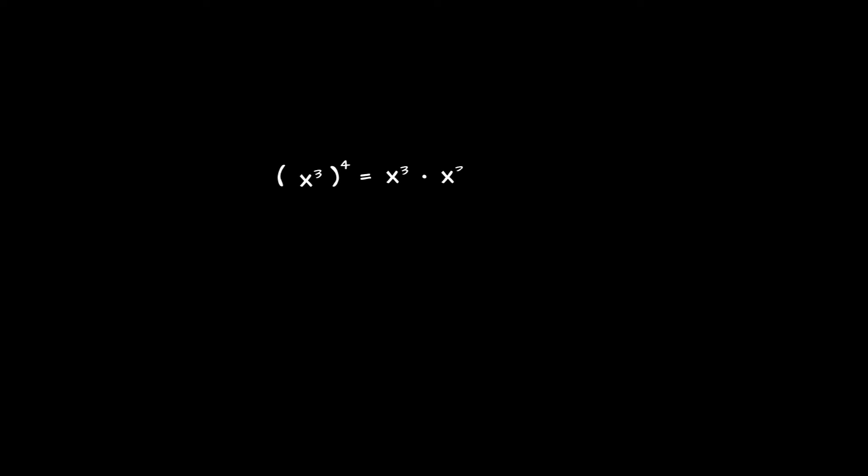Let's take another look at an expression involving exponents. We have x to the power 3, which is itself being raised to an exponent — namely the exponent 4. What happens if we raise an exponential expression to an exponent? Again, let's appeal to the definition: x cubed raised to the power 4 means we take x to the 3 and multiply it by itself four times.